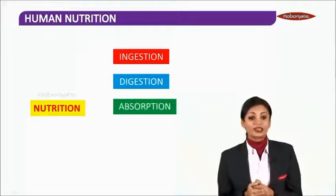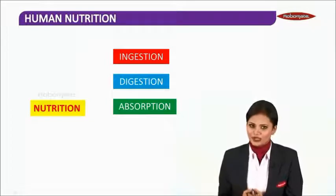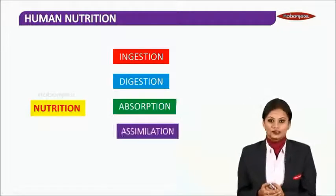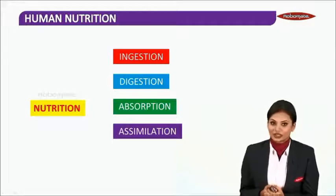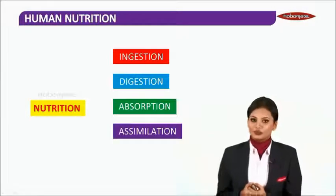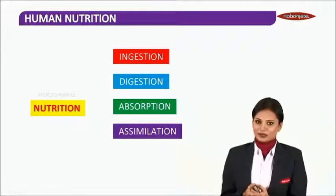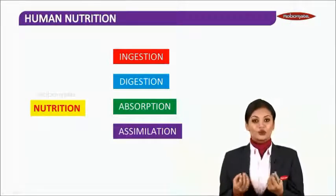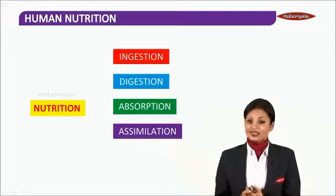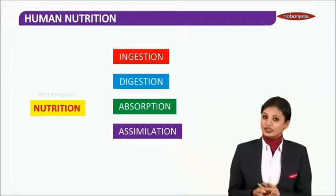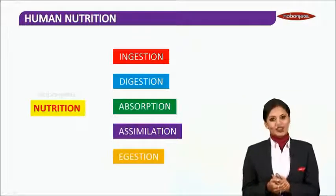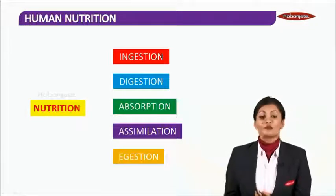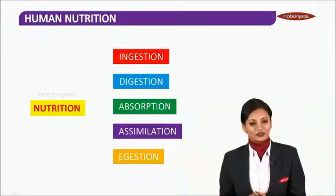After digestion, there is absorption. Then after absorption, there is something called as assimilation. This might be a new word for you. Assimilation means the food which is absorbed is going and settling inside the cell. Then after assimilation, we have a process called as egestion. Egestion means removal of the waste material from the body.